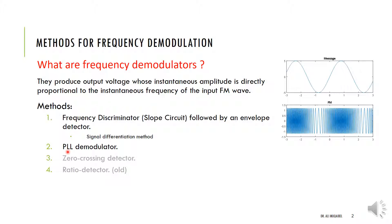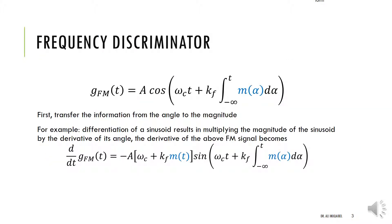There are different methods to achieve FM demodulation. The first is called frequency discrimination or slope circuit. Another is the PLL (phase-locked loop) demodulator. There are also other techniques like zero-crossing detectors and ratio detectors. We'll focus on the first two — frequency discrimination or slope circuits, which are followed by an envelope detector — and then PLL.